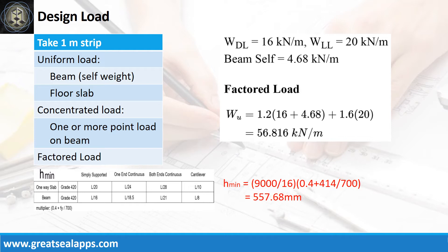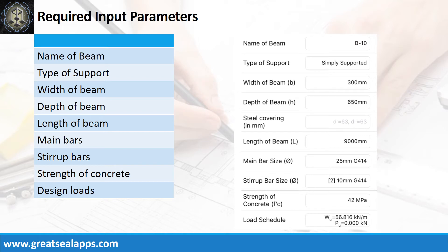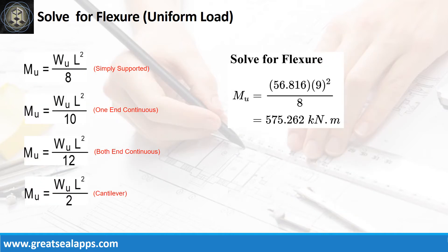The beam's self-weight is 4.68 kN/m, for a factored load of 56.816 kN/m. Input parameters required: beam name BE10, type of support simply supported, width 300mm, depth 650mm, length 9000mm, main bars 25mm at grade 414, stirrup bars 10mm at grade 414, concrete strength 42 MPa, and factored uniform load 56.816 kN/m.